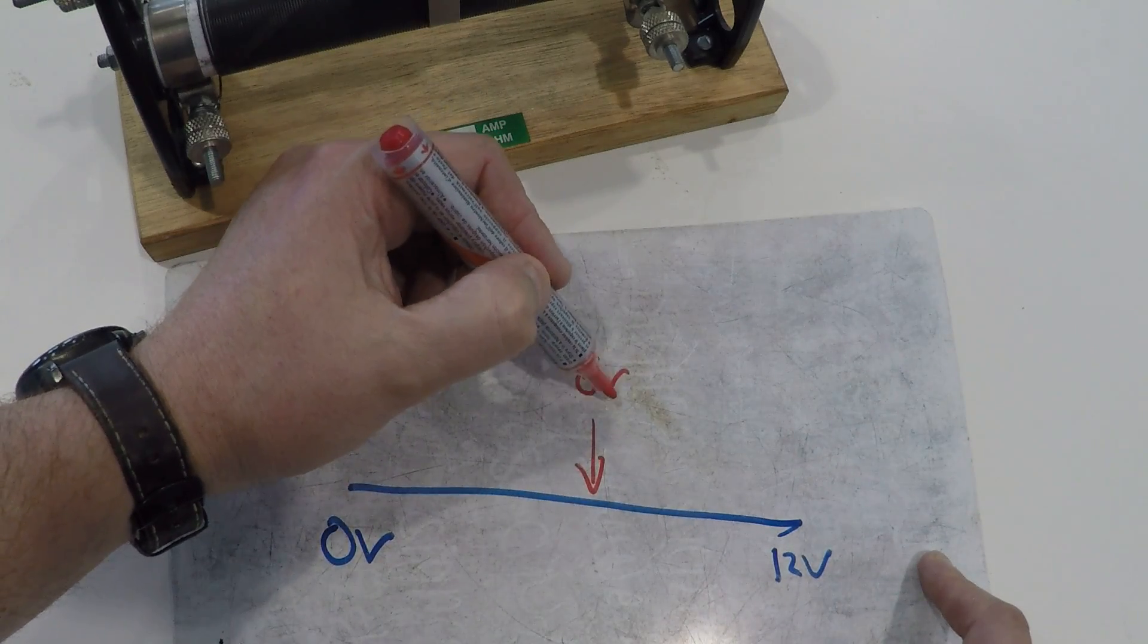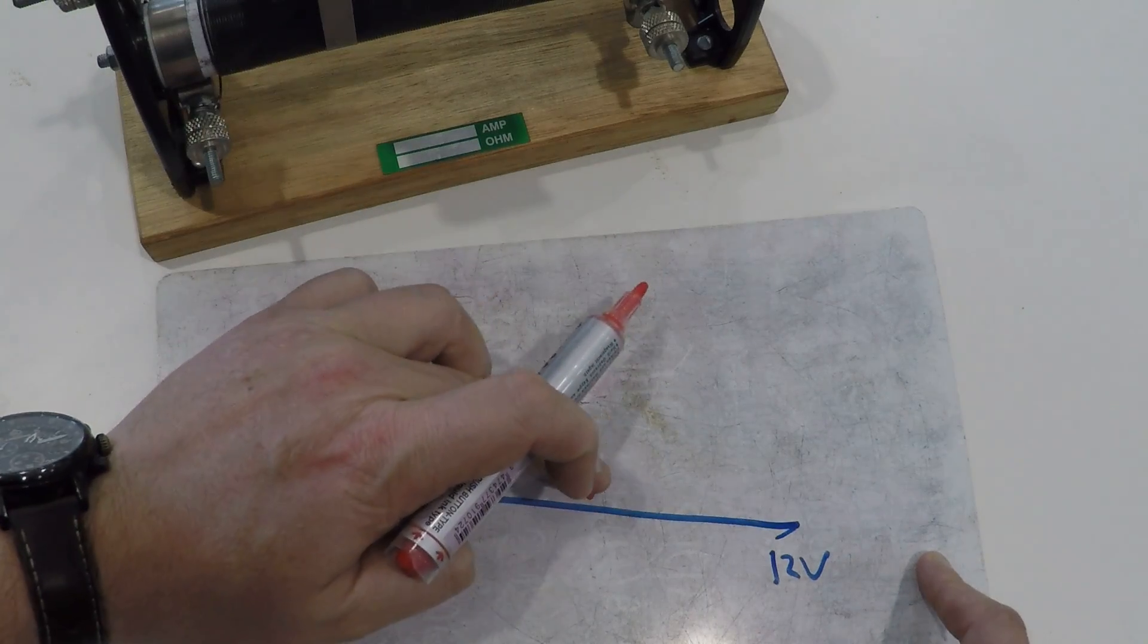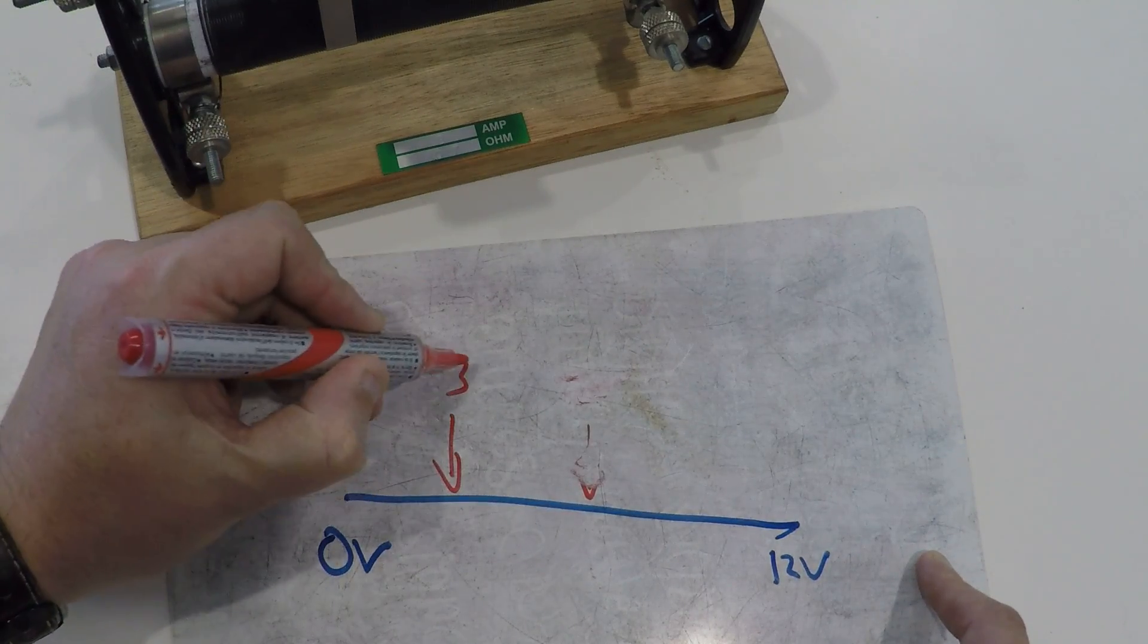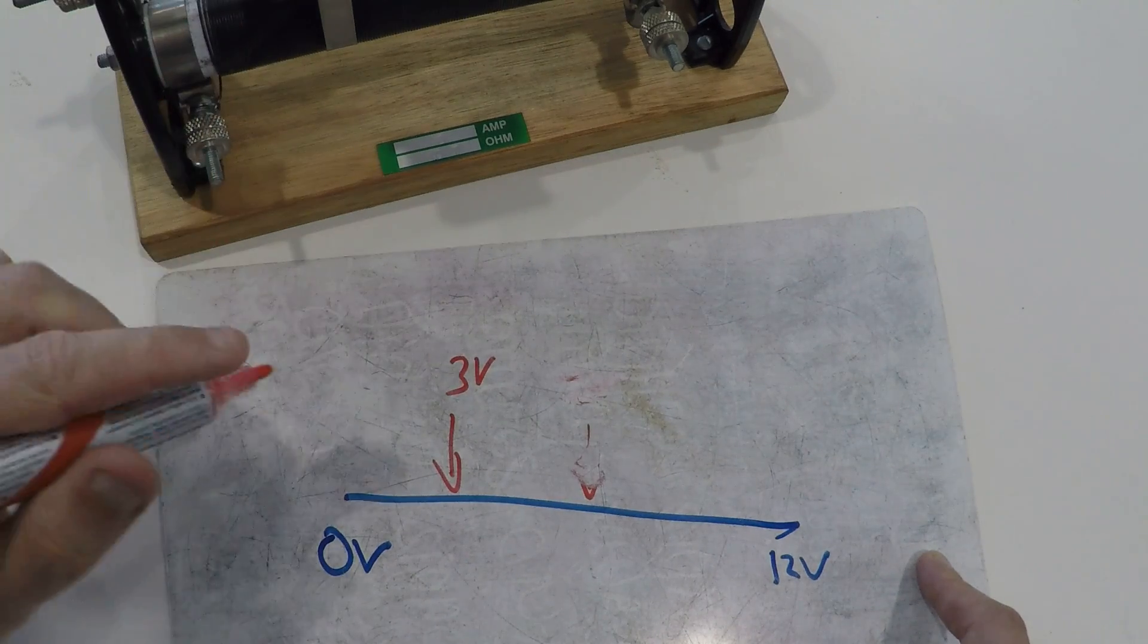If I move my slider maybe a quarter of the way to here, well maybe you'd get three volts.